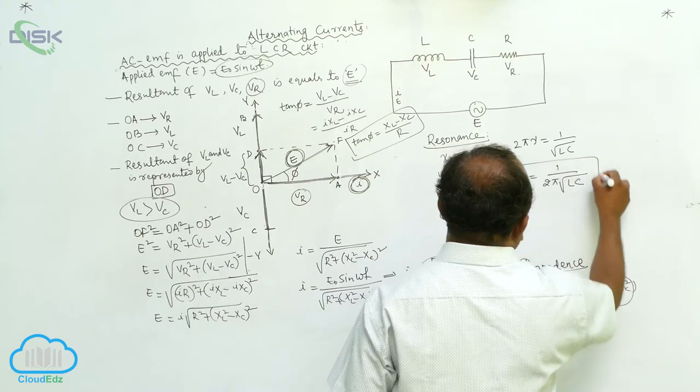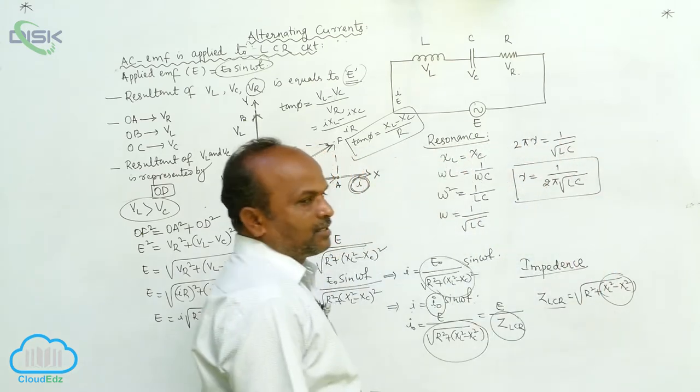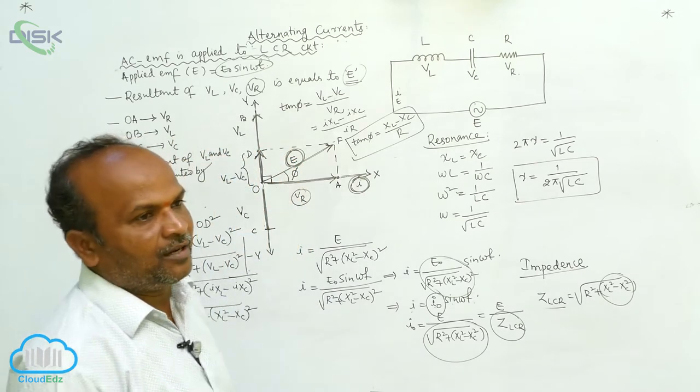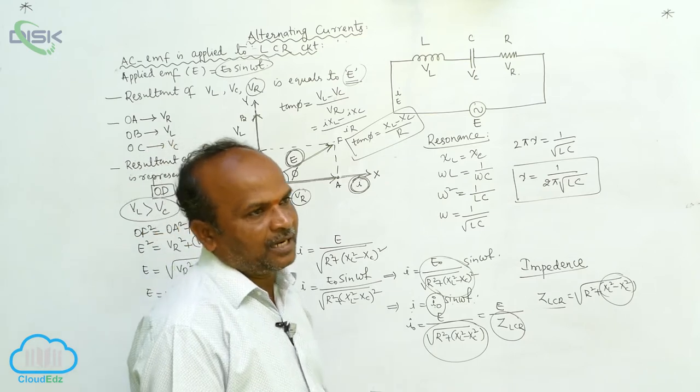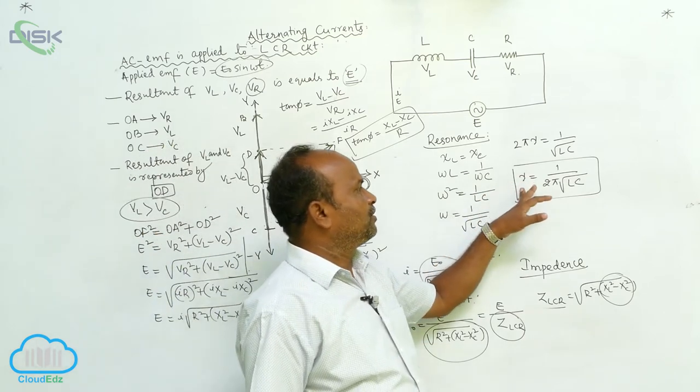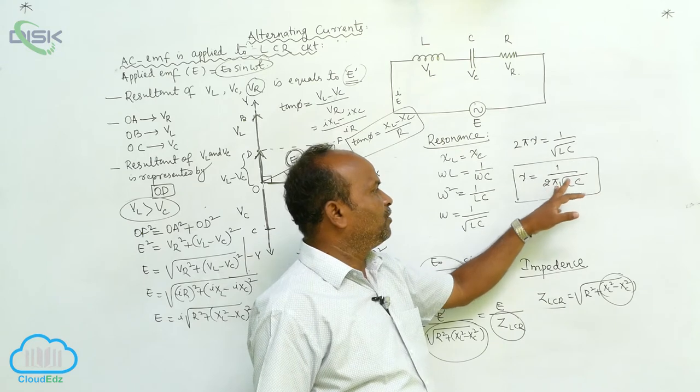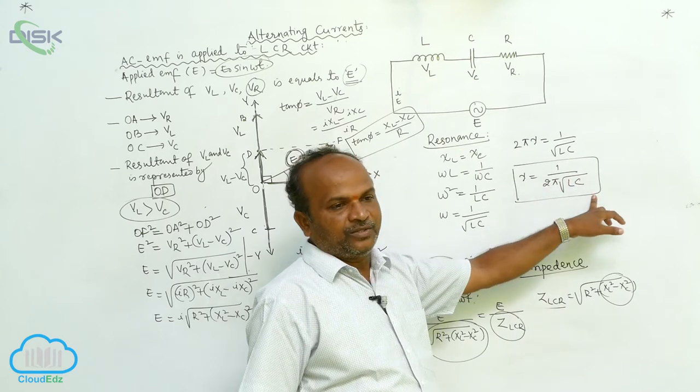This is called resonance circuit. What is the condition to be kept the circuit under resonance? Nu equals 1 by 2 pi into square root of L into C.